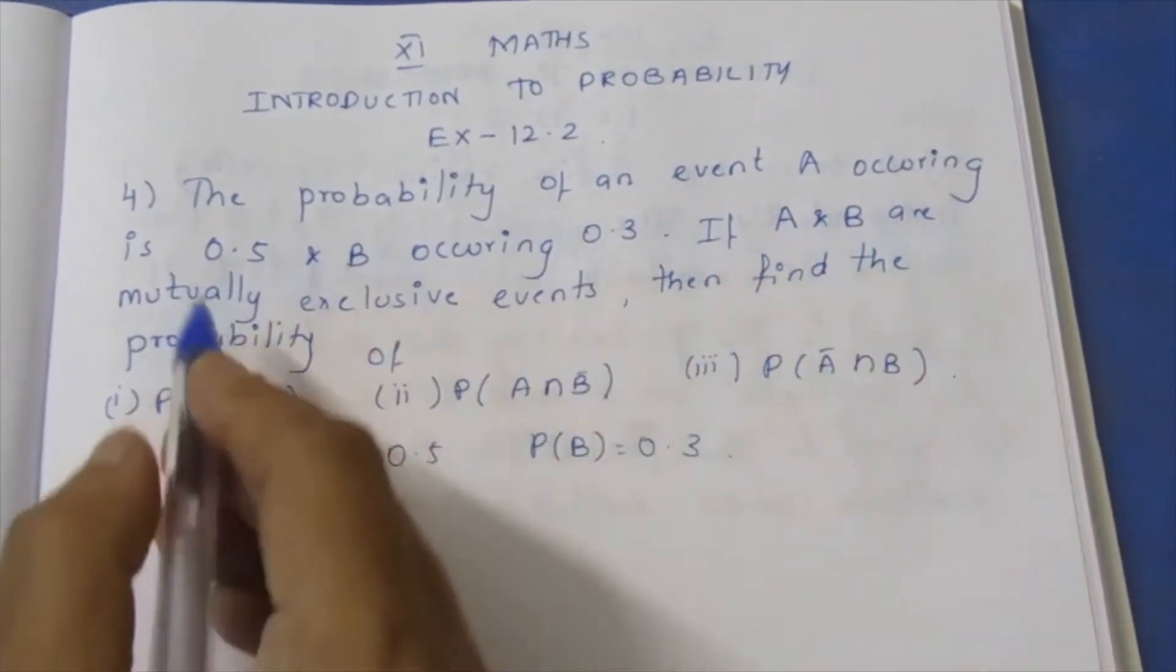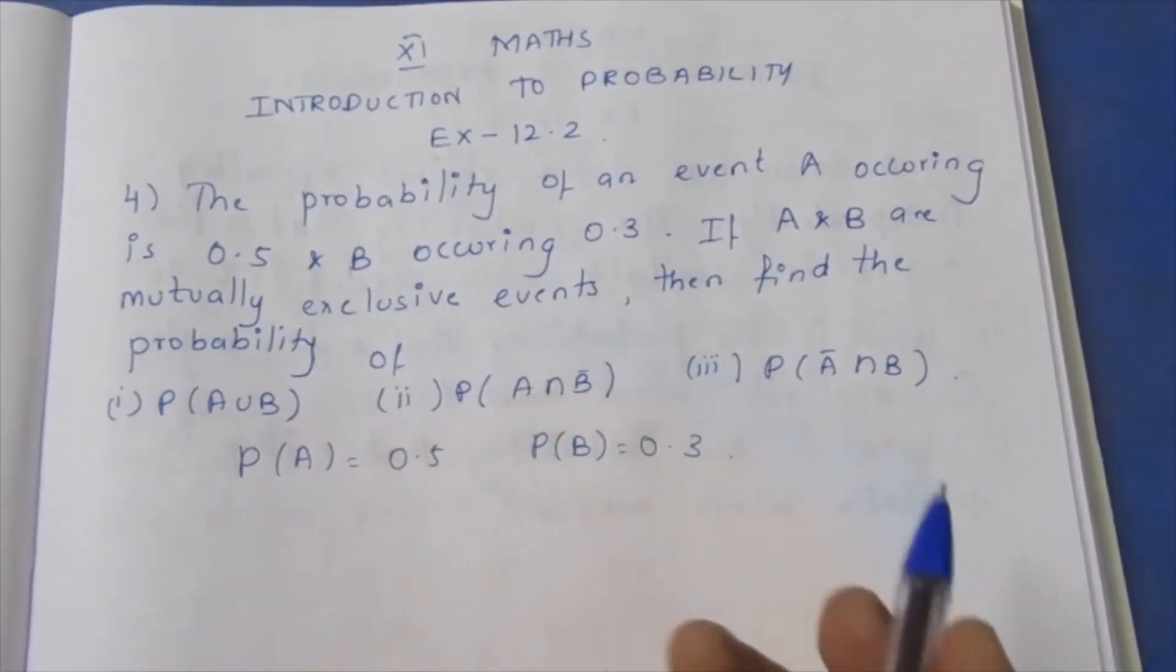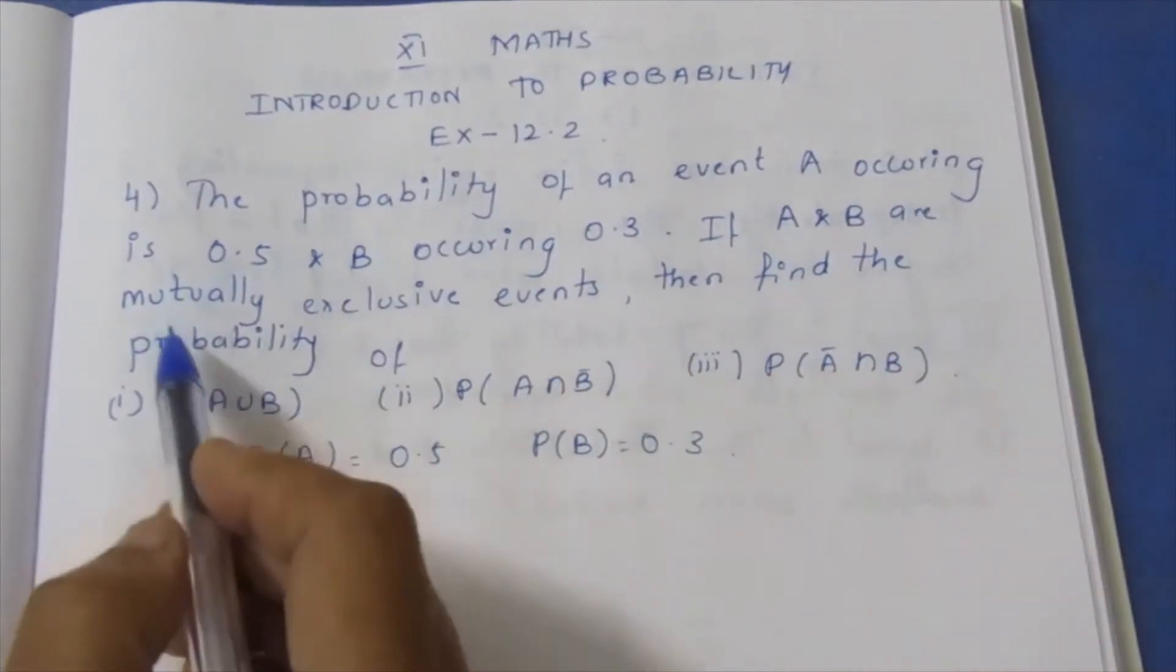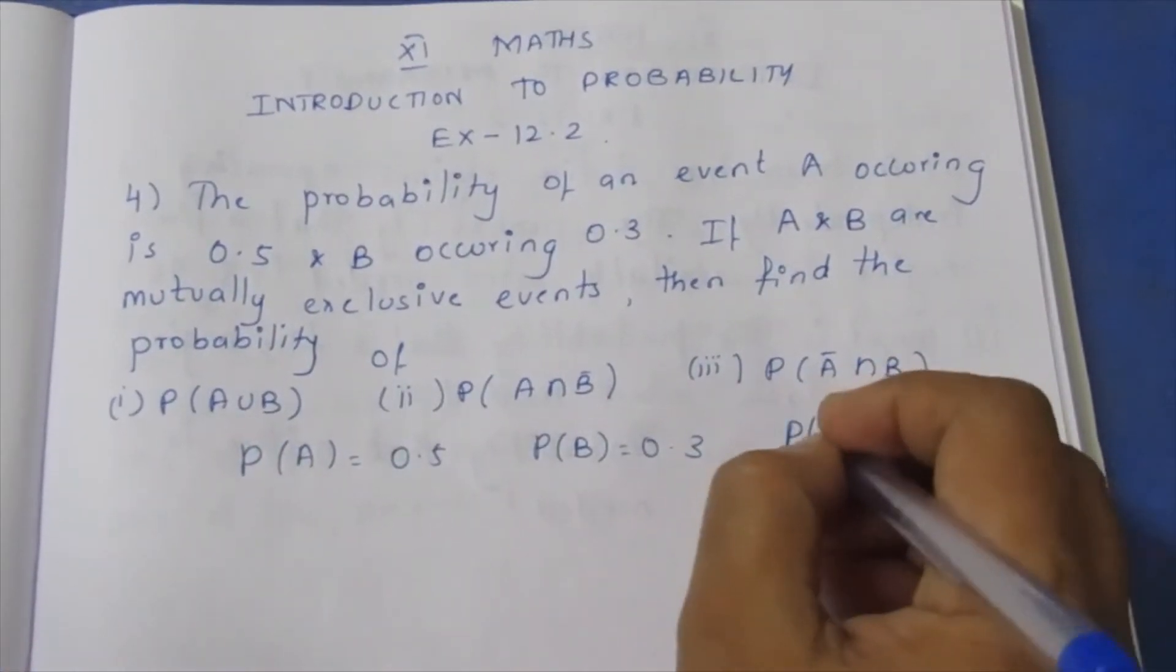If A and B are mutually exclusive events, then P of A intersection B equals 0.